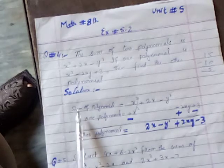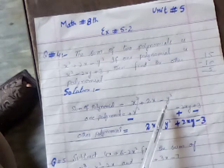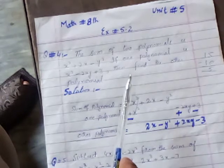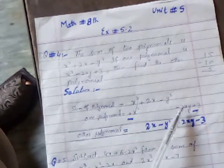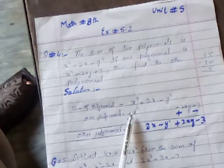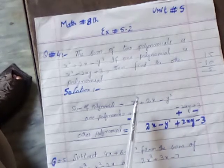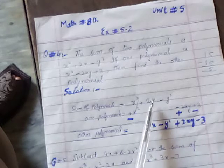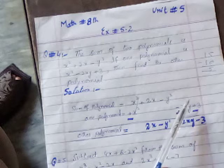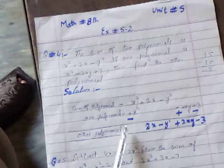The sum of polynomials is equal to x squared plus 2x minus y squared. One polynomial is given, and we need to find the other polynomial. We will subtract the given polynomial from the sum.